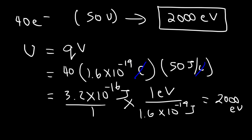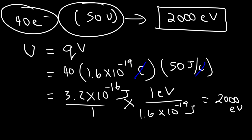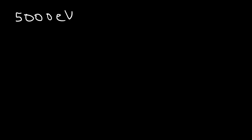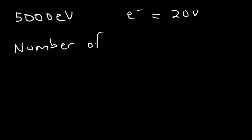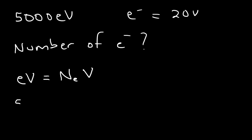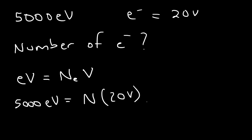The energy in electron volts equals the number of electrons N_E times the voltage on each electron V. So if the total energy is 5,000 electron volts and each electron has a voltage of 20 volts, the number of electrons is 5,000 divided by 20, which equals 250 electrons.